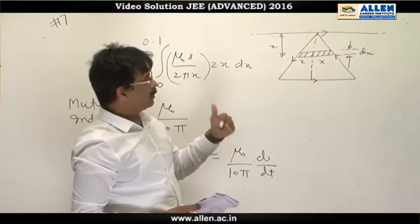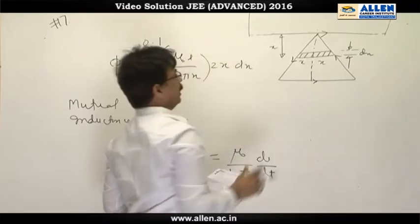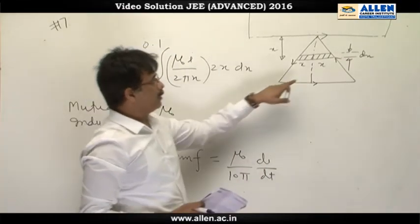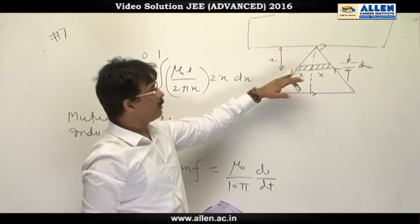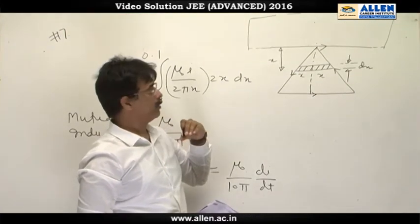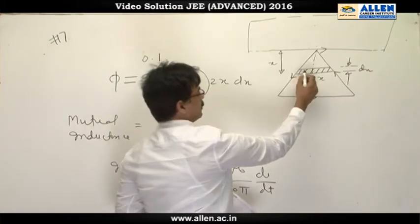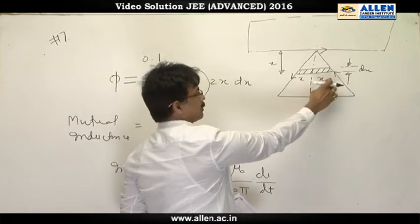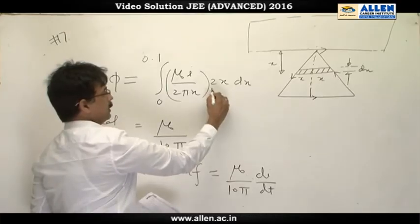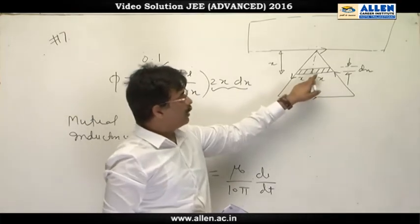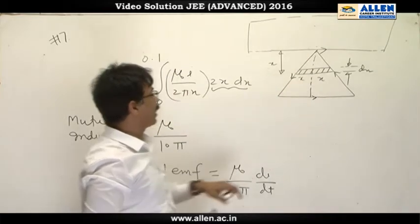You can consider this long wire as a loop of infinite size. When current in the triangular coil will be varied, an induced EMF will come in this infinitely long coil. So we consider a strip at distance x of thickness dx. Area of this strip is 2x dx and magnetic field on this strip due to wire is mu not i upon 2 pi x.